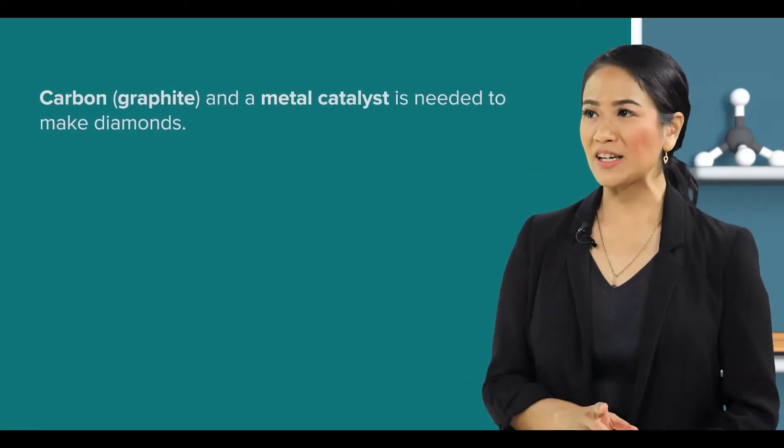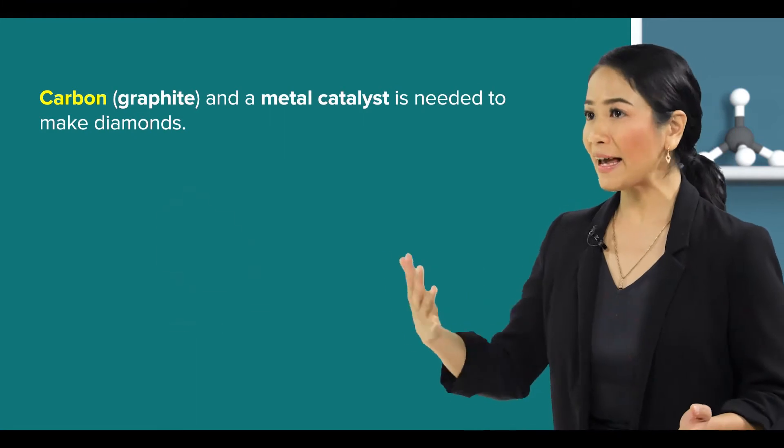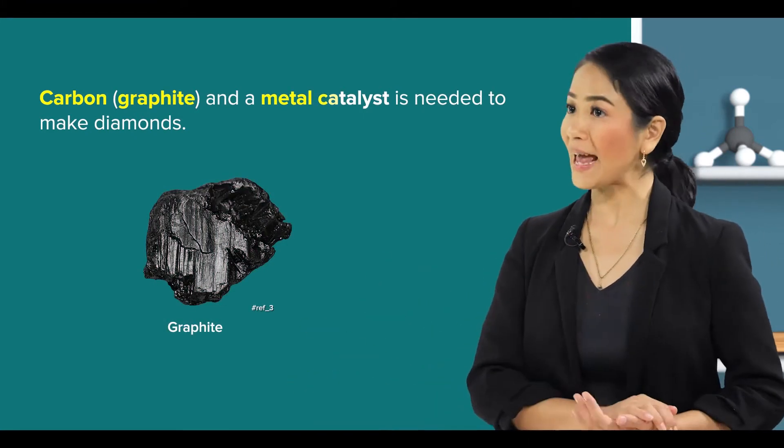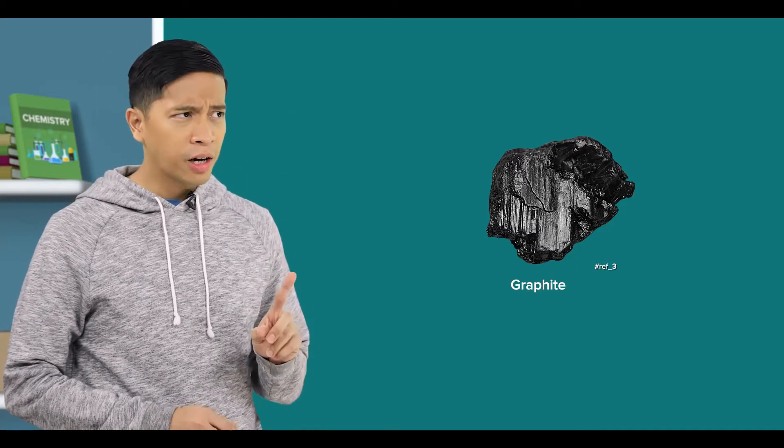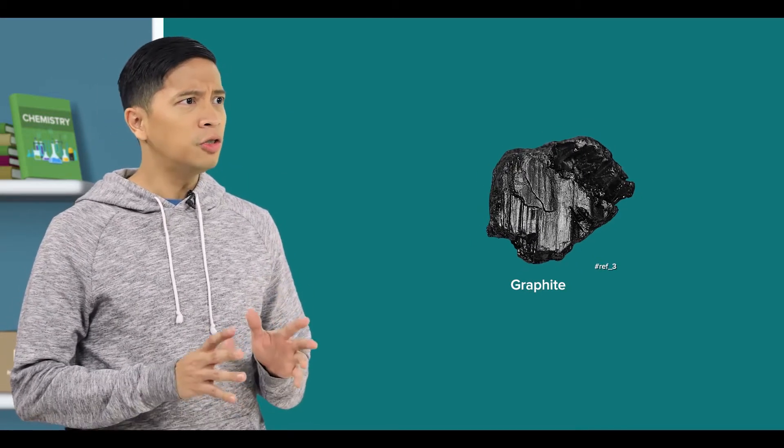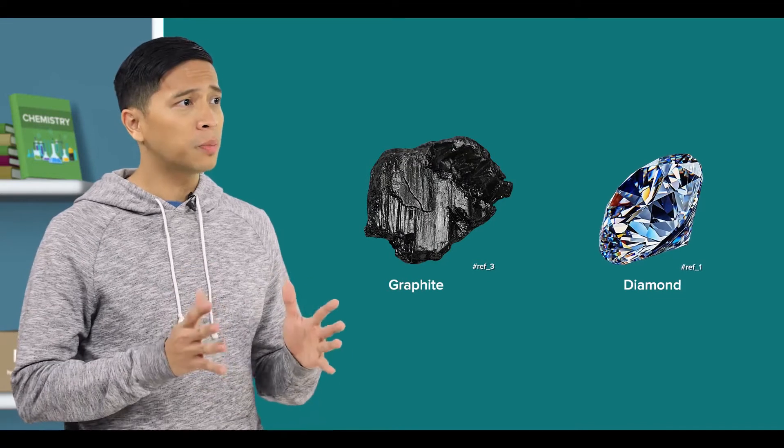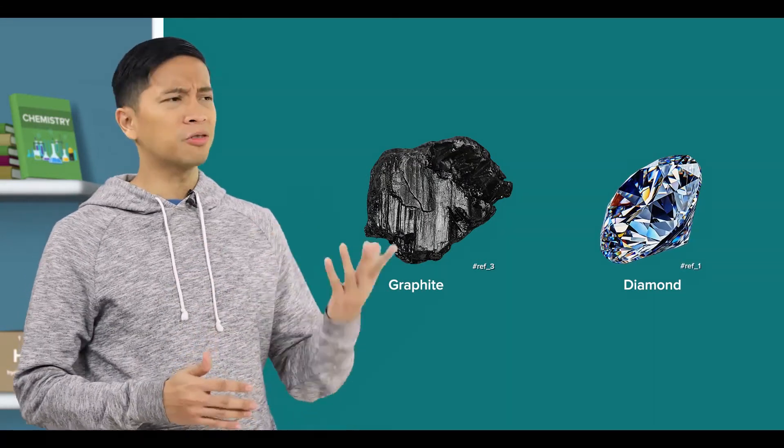Well, all we need are some carbon, light graphite, and a metal catalyst. Wait. Black graphite? That's used to make beautiful, transparent, sparkly diamonds? That's crazy!